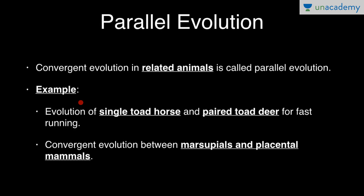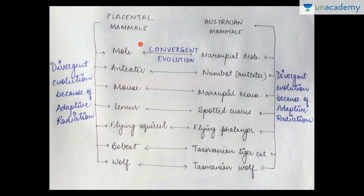An example of parallel evolution is the evolution of the single-toed horse and the paired-toed deer, both adapted for fast running — a cursorial adaptation. Convergent evolution between marsupials and placental mammals is also called parallel evolution, since these are closely related animals.